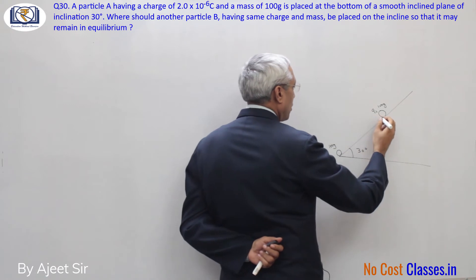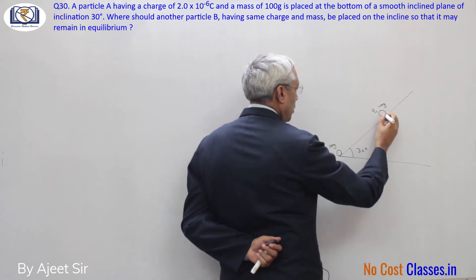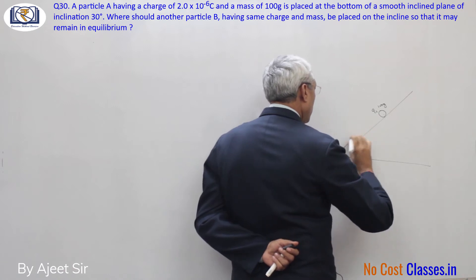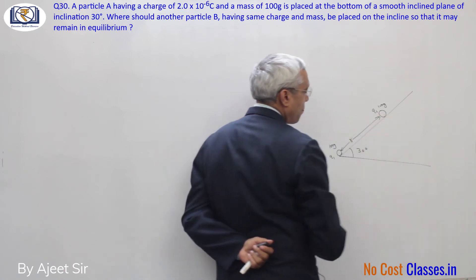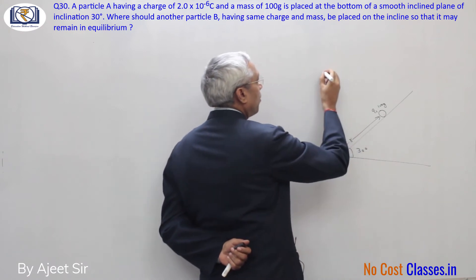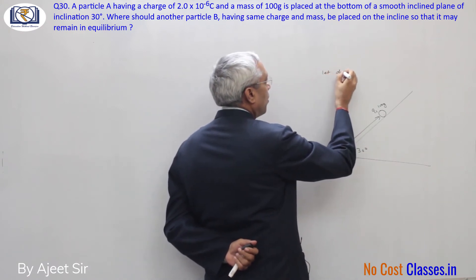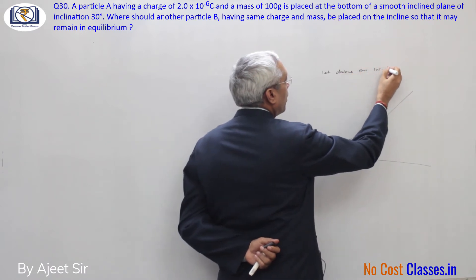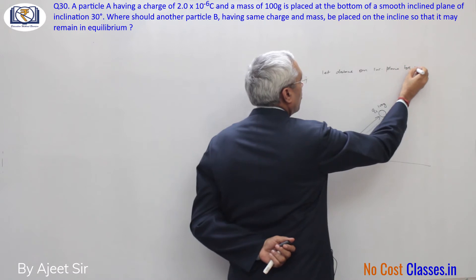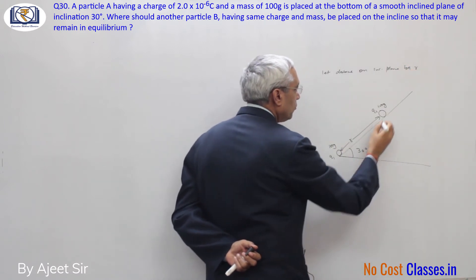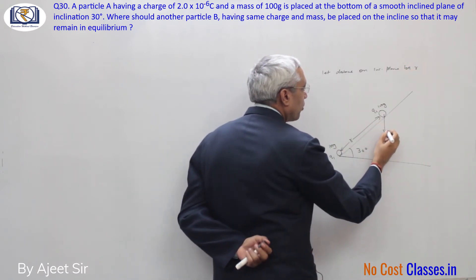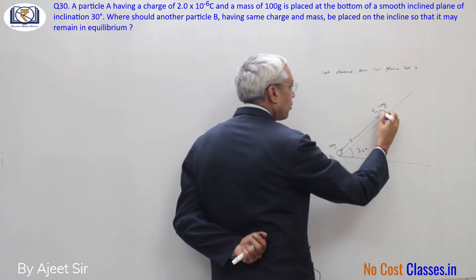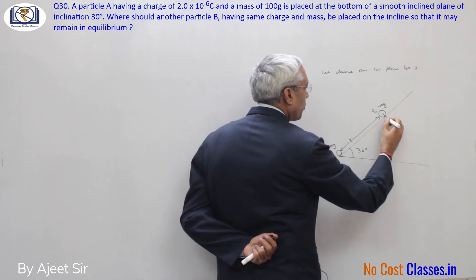What should the distance be? Let the distance on the inclined plane be r. Below it, the weight will act as mg vertically downward. This angle is 30, so this angle will also be 30.